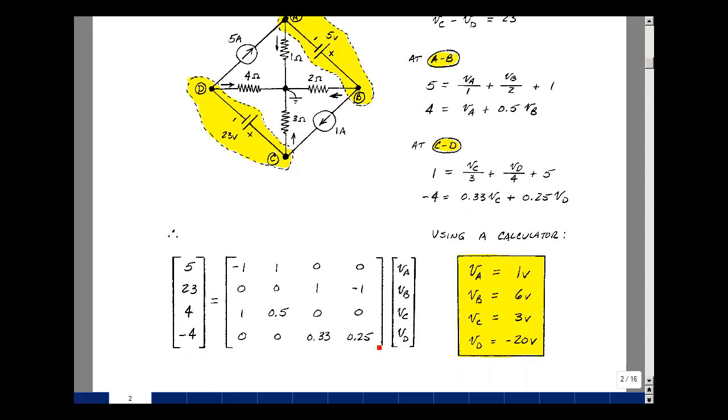You can solve for V sub A, V sub B, V sub C, and V sub D using Kramer's rule. There are quite a few zeros here. It wouldn't be all that much work, but you also maybe use your calculator. See if your calculator has a matrix manipulation option.